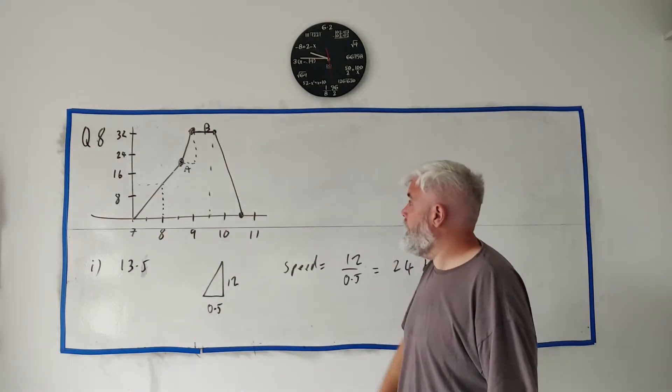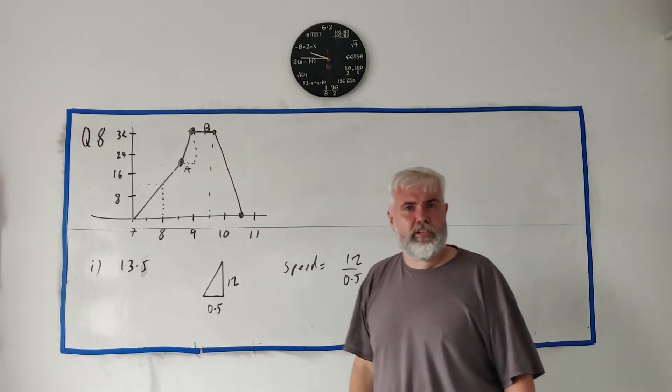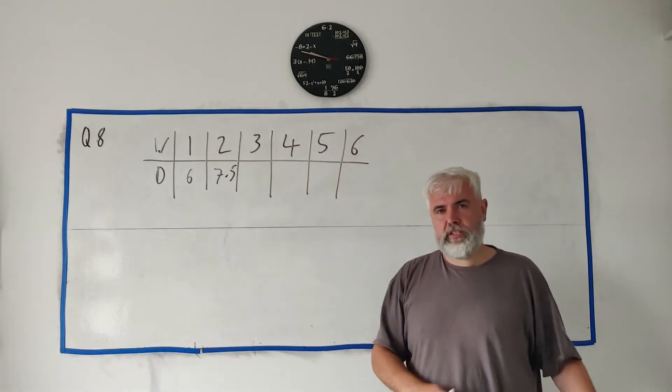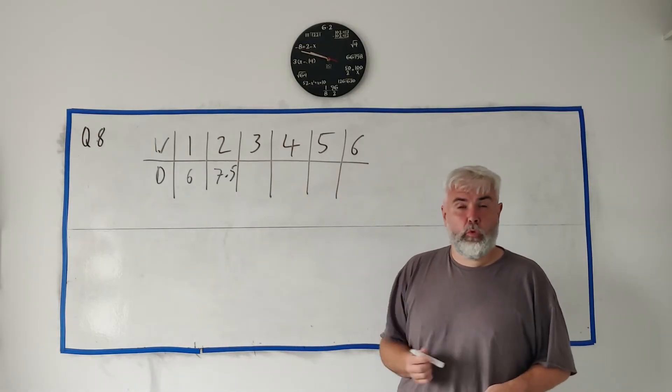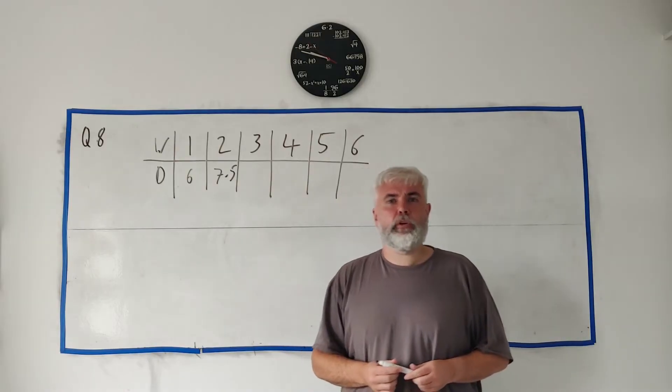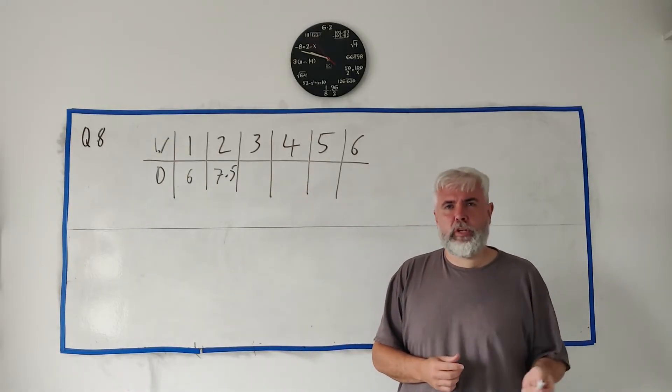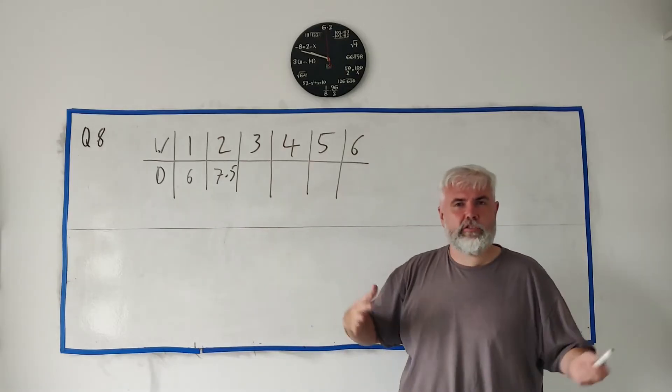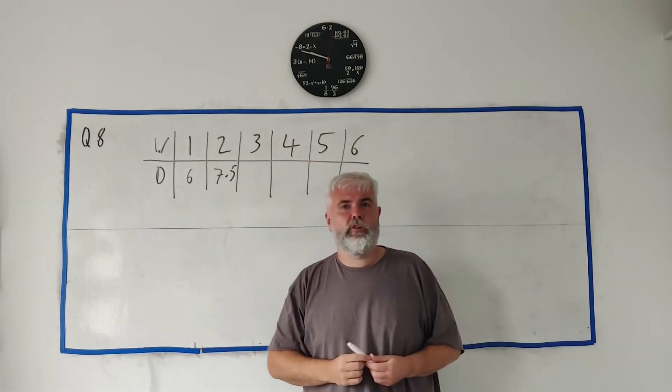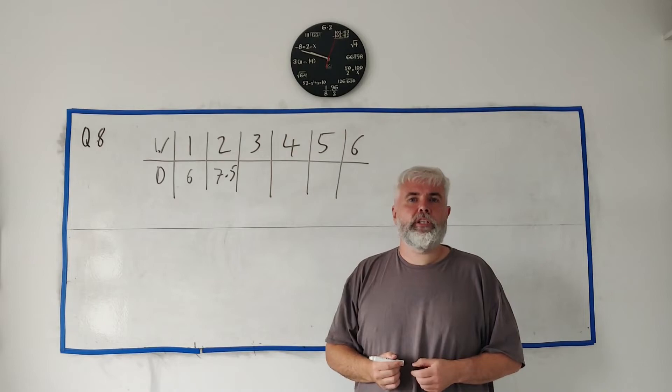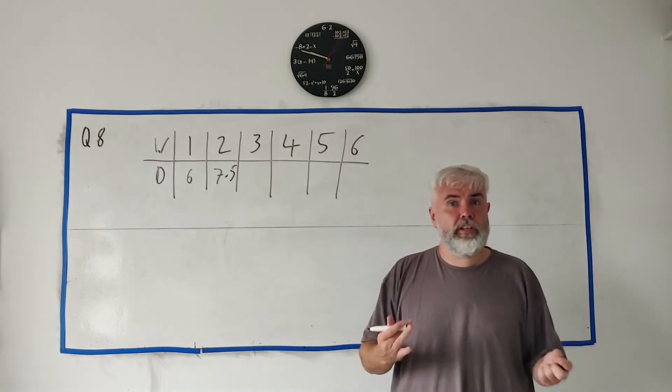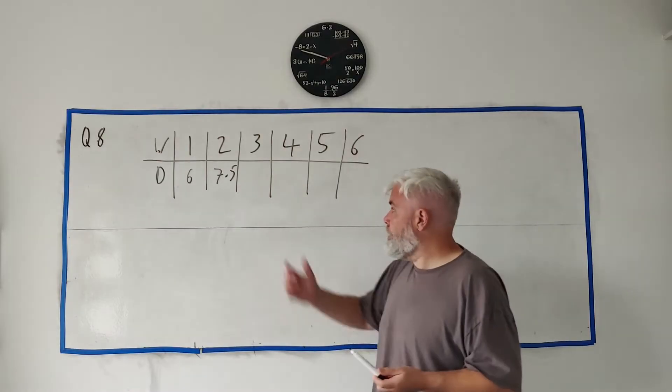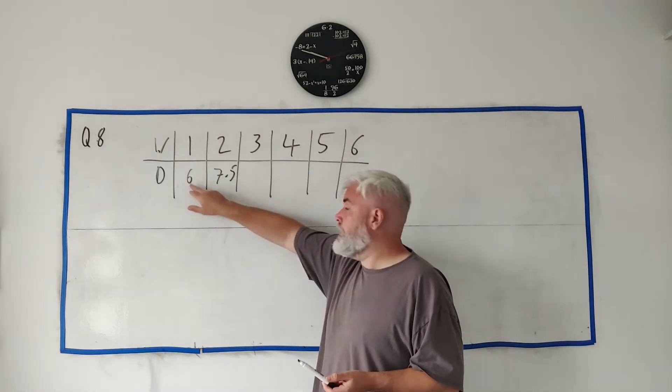Onto part B. We're leaving cycling away and we're moving on to running here. Ellie takes up running and in the first week she runs, she runs 6 kilometers over a whole week—that's not just one run, 6 kilometers over the whole week. And each week she wants to run 1.5 kilometers more. So the second week, instead of running 6, she runs 7.5.